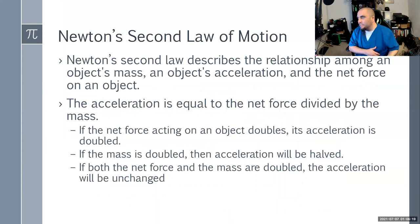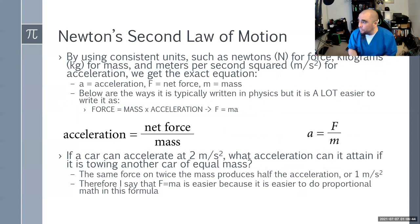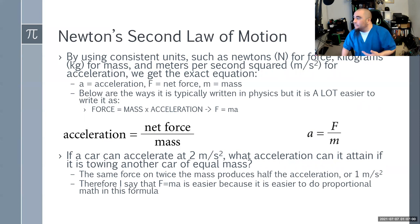Newton's second law describes a relationship among an object's mass, acceleration, and net force. Acceleration equals net force divided by its mass. If the net force doubles, the acceleration is doubled. If the mass is doubled, the acceleration is halved. Using consistent units — newtons for force, kilograms for mass, and meters per second squared for acceleration — we get this exact equation.